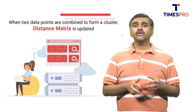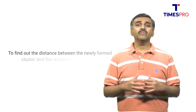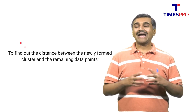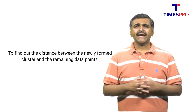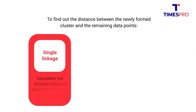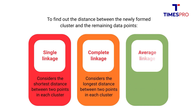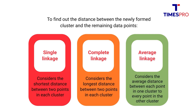Let's understand the different linkages in agglomerative clustering. When two data points are combined to form a cluster, the distance matrix needs to be updated to find the distance between the newly formed cluster and the remaining data points. Single linkage considers the shortest distance between two points in each cluster. Complete linkage considers the longest distance between two points in each cluster. Average linkage considers the average distance between each point in one cluster to every point in another cluster.